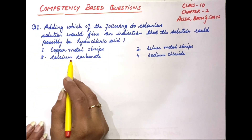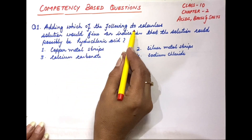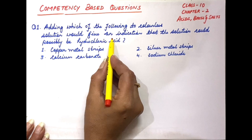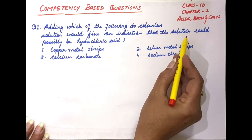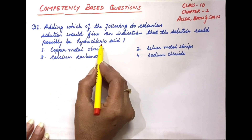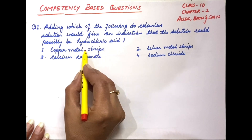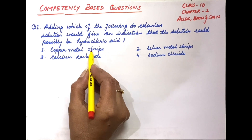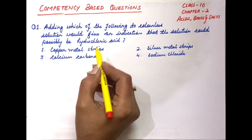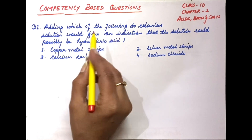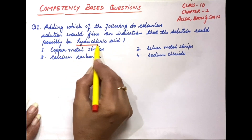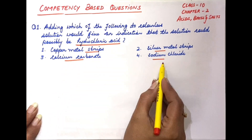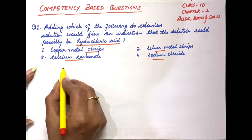First question is: adding which of the following to a colorless solution would give an indication that the solution could possibly be hydrochloric acid? The options are copper, silver, calcium carbonate, and sodium chloride. We need to determine which one, when added, would indicate that the colorless solution is HCl.